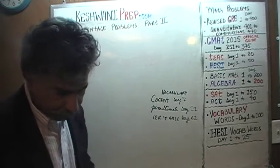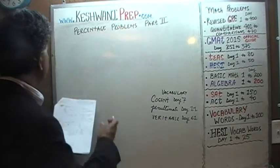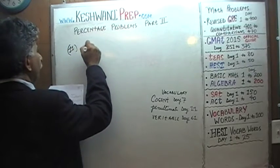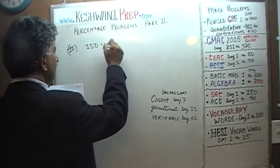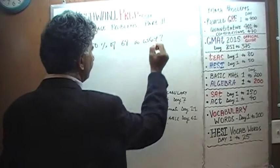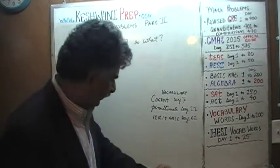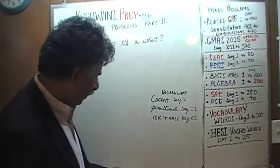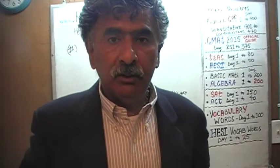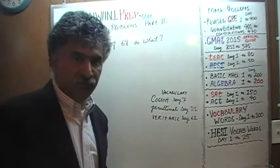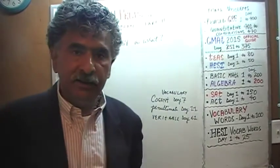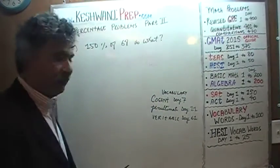Let's get going. Problem number 11: 150% of 68 is what? We can solve it algebraically or more intuitively. Let's do the algebraic method first — the geeky academic method — and then we'll worry about doing it intuitively.